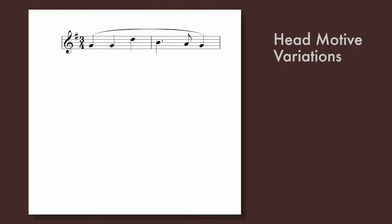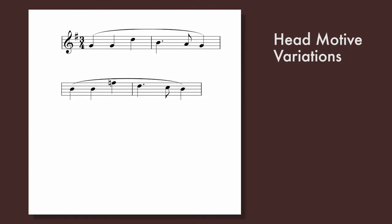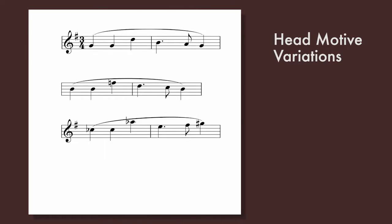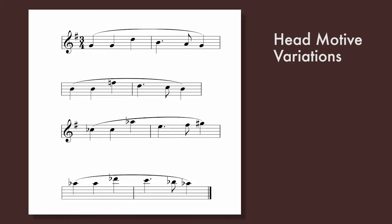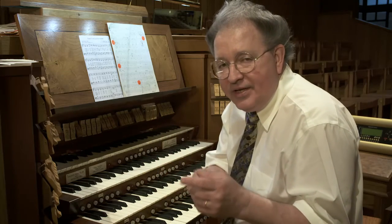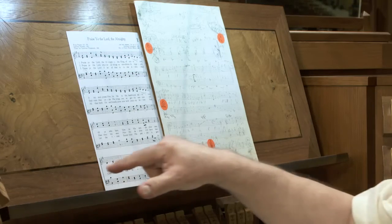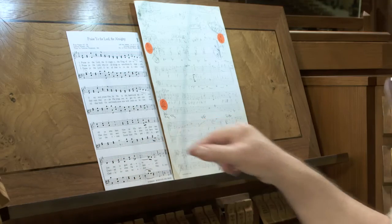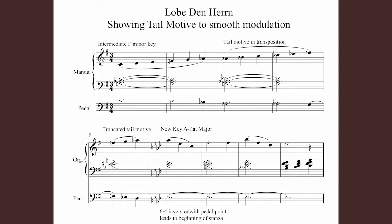Here's that head motive. Now, continuing — because we are really out in the desert by this point, really far away from where we need to be. We've got to get back home. So what we're going to do is take what we call the tail motive — the motive that's in the last phrase of the hymn — and use that in the key of F minor, progressing all the way through till we get to the tonic of A-flat major. And then I bring back the head motive.